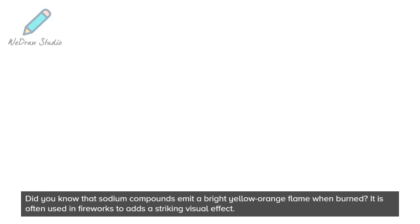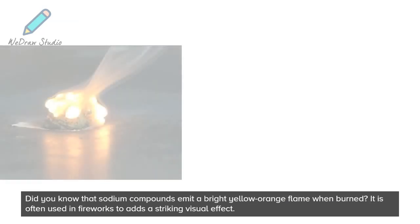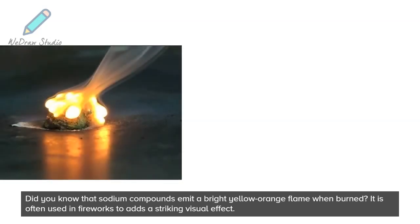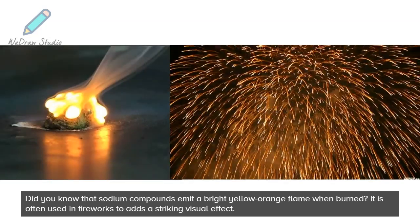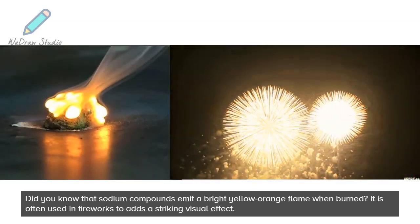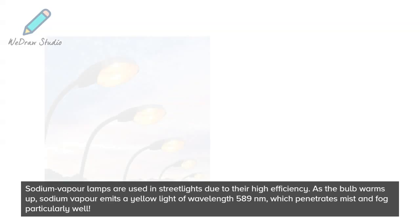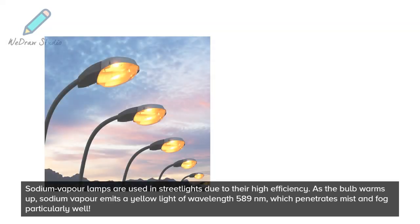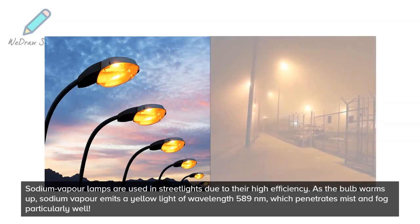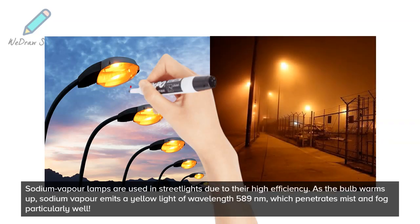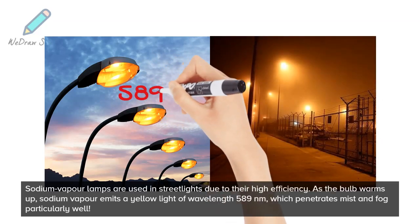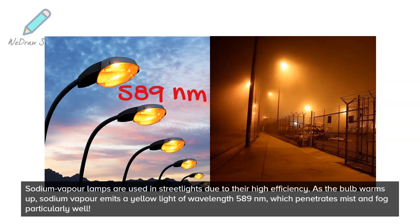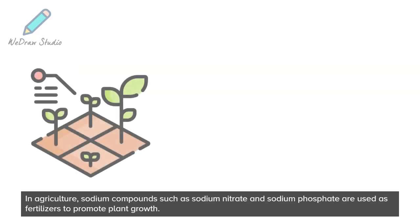Did you know that sodium compounds emit a bright yellow-orange flame when burned? It is often used in fireworks to add a striking visual effect. Sodium vapor lamps are used in street lights due to their high efficiency. As the bulb warms up, sodium vapor emits a yellow light of wavelength 589 nanometers, which penetrates mist and fog particularly well.